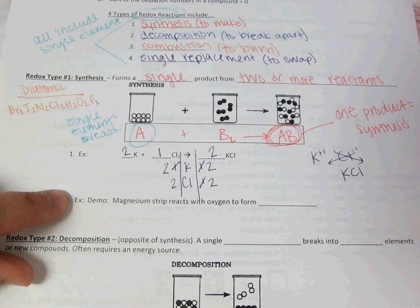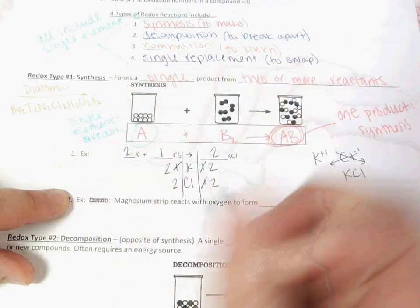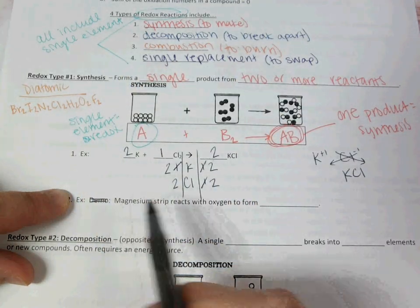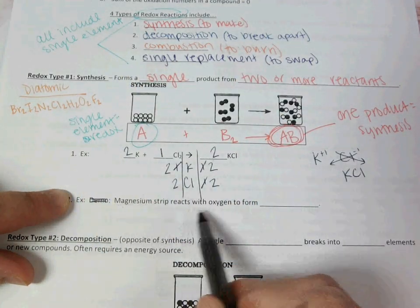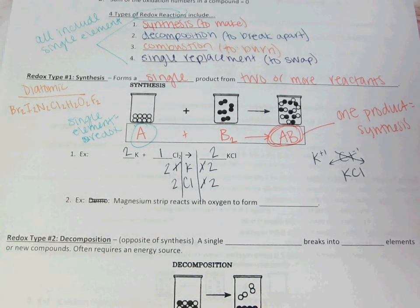We have an example here. We'll do a demo at a different time when we have more time. A magnesium strip reacting with oxygen to form the combination of magnesium and oxygen, we call that magnesium oxide.